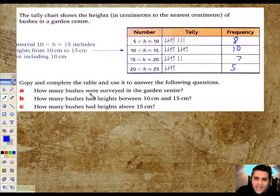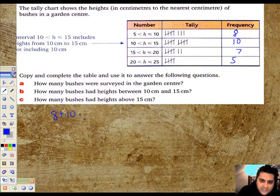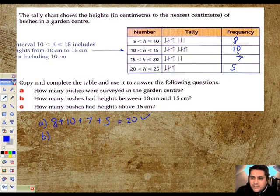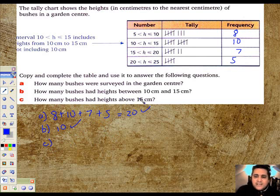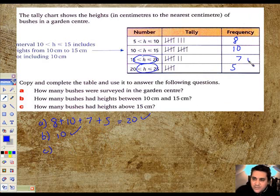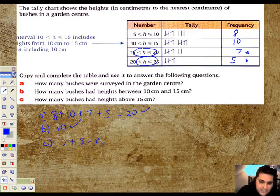Before I even get any further, I just want to fill up the frequency here, so the tally's done for us. Five and three, eight. Five and five, ten. Five and two, seven, and five, the big bushes. Copy and complete, I've done that. How many bushes were surveyed in the garden centre? I've got eight plus ten plus seven plus five, 18 plus 12, that's going to be 30 bushes. So that's A done. Part B, how many bushes had heights between 10 and 15? Well that's this category here, and that's ten of them. And finally, how many bushes had heights above 15? That's this lot and this lot, so it's seven plus five is 12.